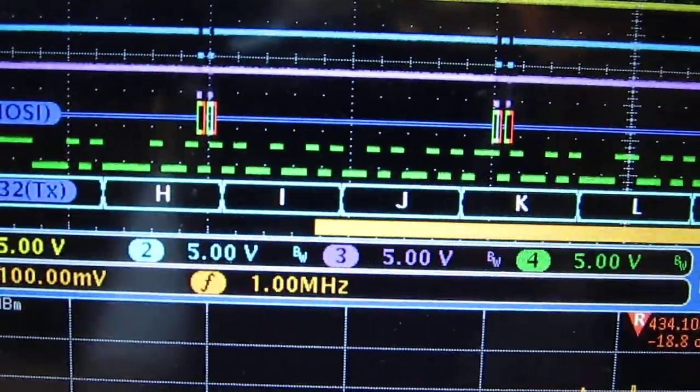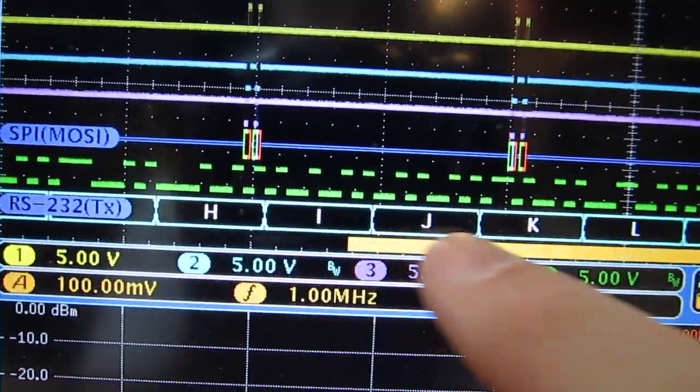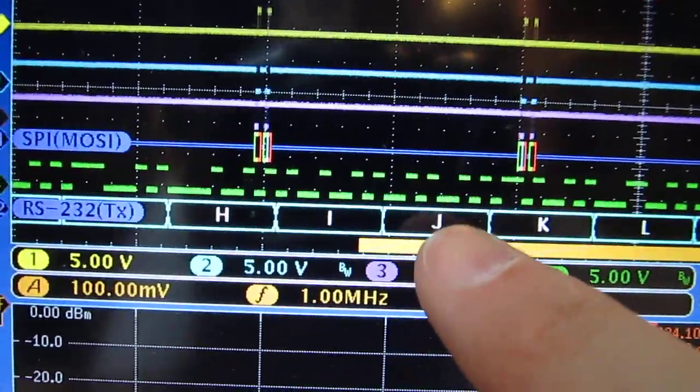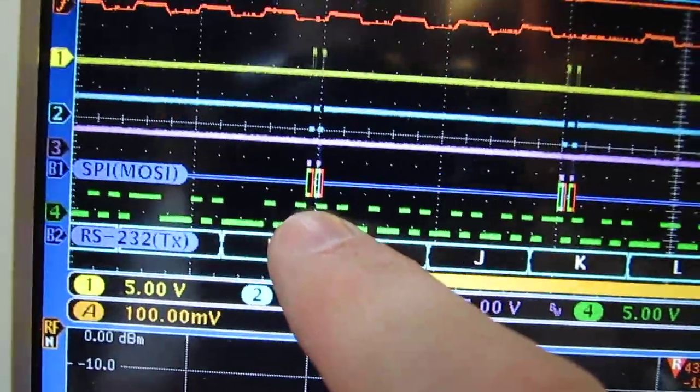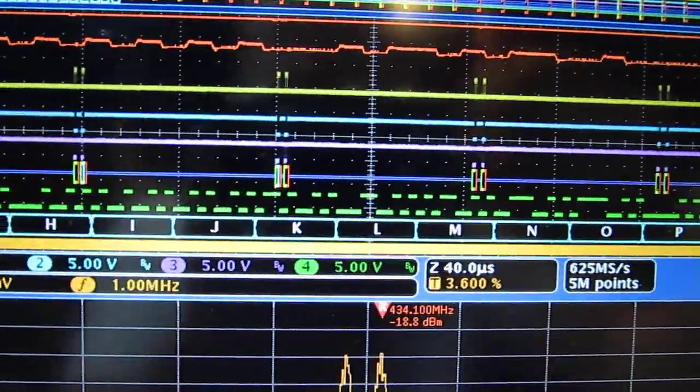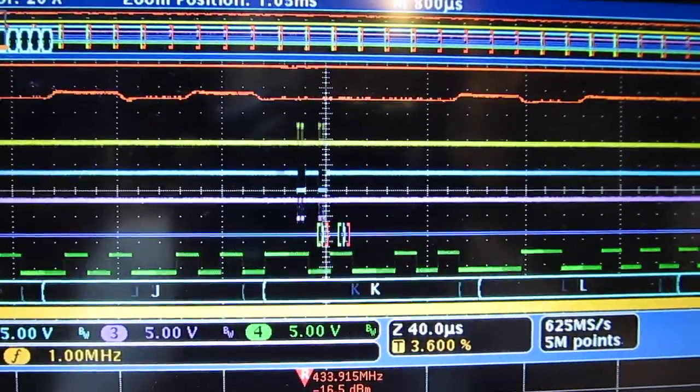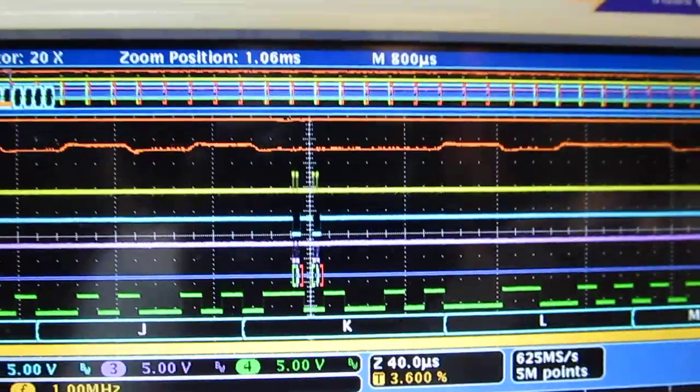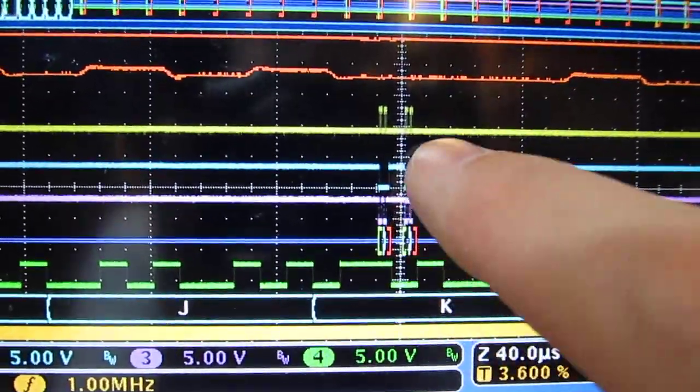That's running at 115 baud. But the SPI bus is actually running much faster. So we need to zoom in even more to see that. So I'm going to position one of those SPI commands right in about here. And we'll start taking a look at this SPI bus.